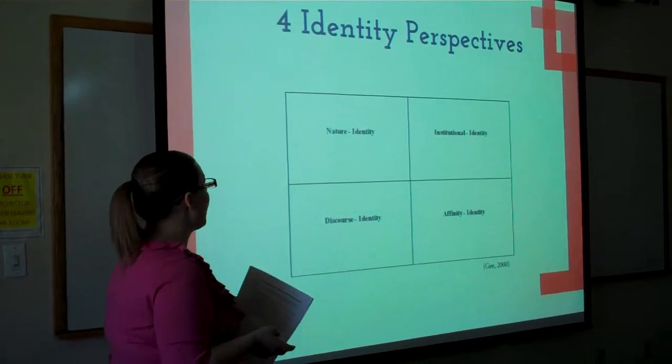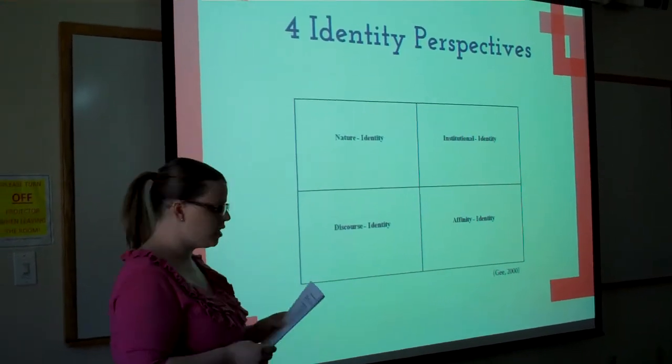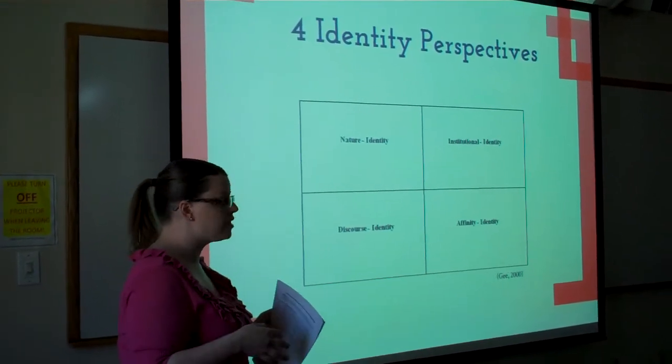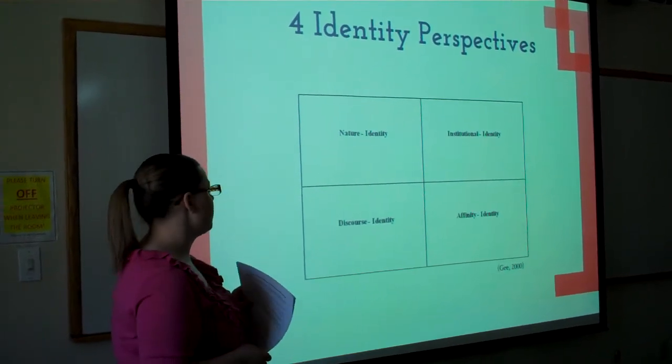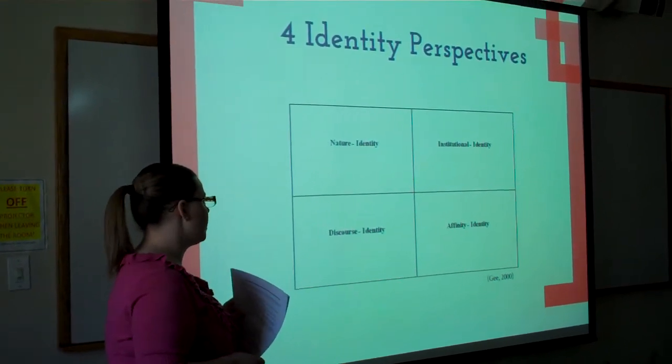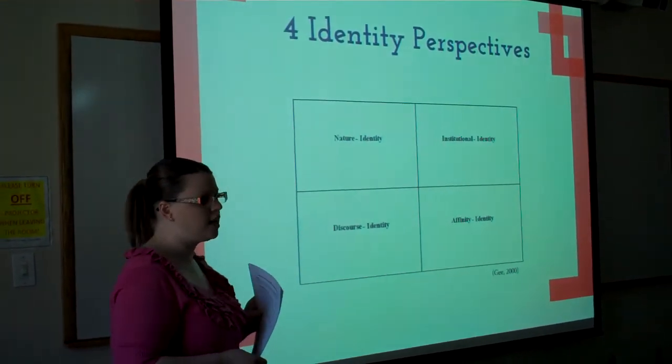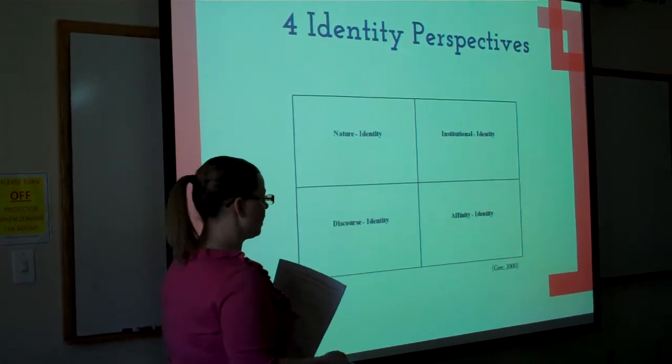Gee looks at four identity perspectives, and he interlocks them. They are nature identity, institutional identity, discourse identity, and affinity identity.